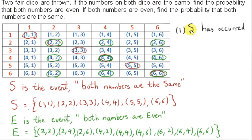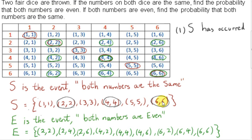In the first question, we are assuming that event S has occurred — in other words, two fair dice have been thrown and both numbers are the same. So we have gotten one of these six outcomes: two ones, two twos, two threes, two fours, two fives, or two sixes. Since the dice are fair, these are equally likely outcomes. To answer the first question, we count the elements of set S for which both numbers are even. There are three such elements. So three of the six elements of S have both numbers even, giving an answer of three over six, which is one half.